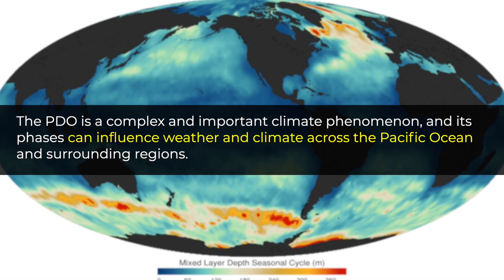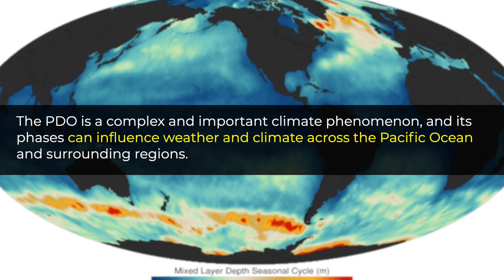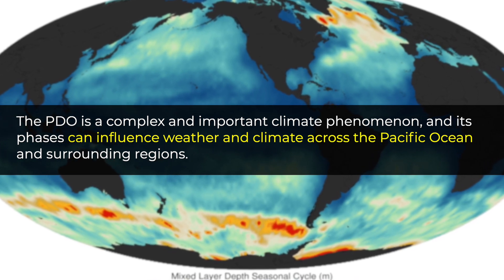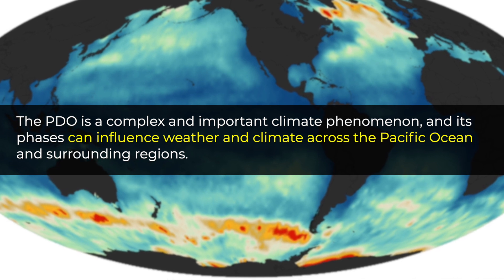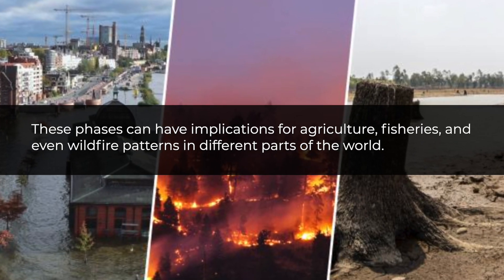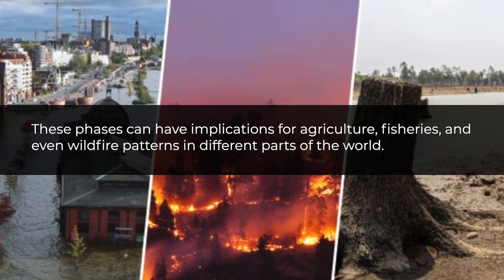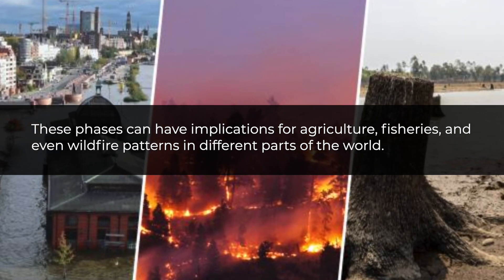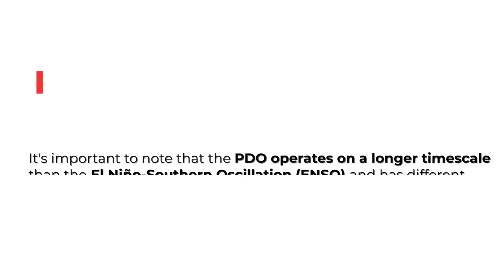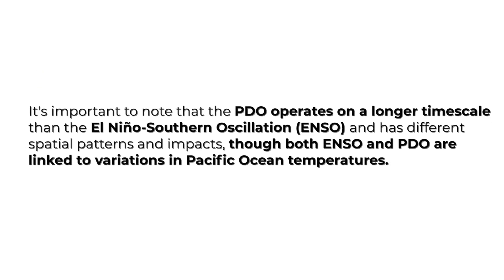The PDO is a complex and important climate phenomenon, and its phases can influence weather and climate across the Pacific Ocean and surrounding regions. These phases can have implications on agriculture, fisheries, and even wildfire patterns in different parts of the world. It is important to note that the Pacific Decadal Oscillation operates on a longer time scale than the El Niño-Southern Oscillation (ENSO), and has different spatial patterns and impacts, though both ENSO and PDO are linked to variations in Pacific Ocean temperatures.